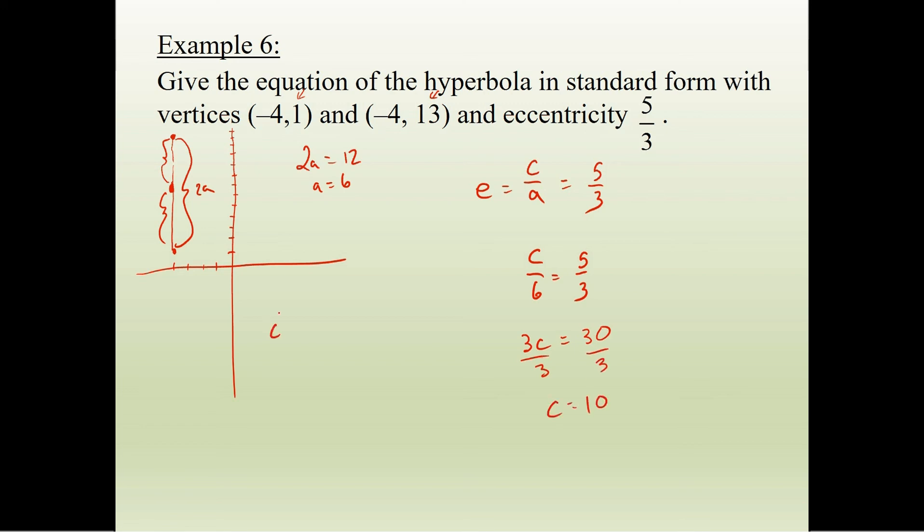So we know c squared equals a squared plus b squared. This gives us 100, 10 squared equals 6 squared plus b squared. So 100 equals 36 plus b squared. We're going to subtract 36. We get 64 equals b squared or b equals 8.